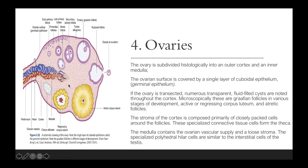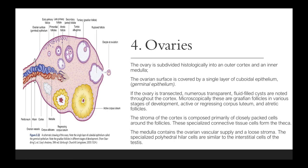The stroma of the cortex is composed primarily of closely packed cells around the follicles, and this specialized connective tissue forms the theca. The medulla, on the other hand, contains the ovarian vascular supply and a loose stroma. The specialized polyhedral hilar cells are similar to the interstitial cells of the testes.